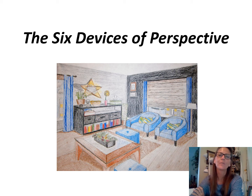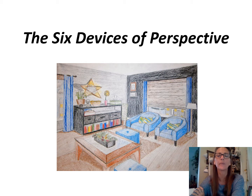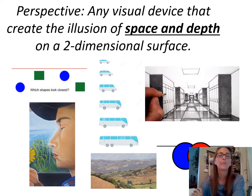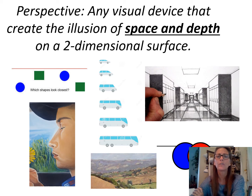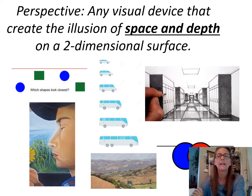We're starting a new unit — getting ready for our perspective unit. Before we can do linear perspective, we're going to talk about the six devices of perspective. Perspective is any visual device that creates the illusion of space and depth on a two-dimensional surface. There are a lot of different ways you can create that space or depth besides just linear perspective, and we're going to go over each of them with visual examples.